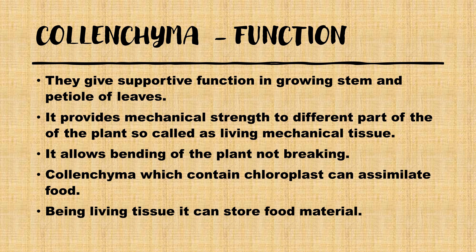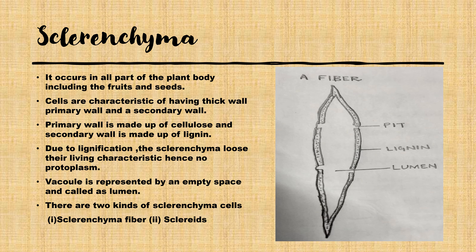The third type of simple permanent tissue is sclerenchyma. Sclerenchyma cells are present all over the plant — in roots, stems, leaves, fruits, and seeds. The cells have thick walls consisting of a primary wall made of cellulose and a secondary wall made of lignin. Due to the presence of lignin, there is no exchange of gas and water, so at maturity the cell is dead — the protoplasm is dead and the vacuole is represented by the lumen. There are two kinds of sclerenchyma cells: sclerenchyma fibers and sclerids.